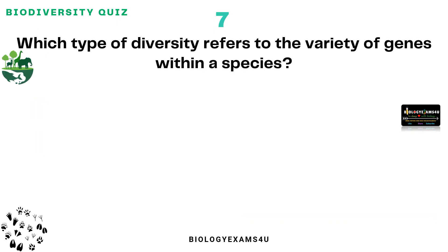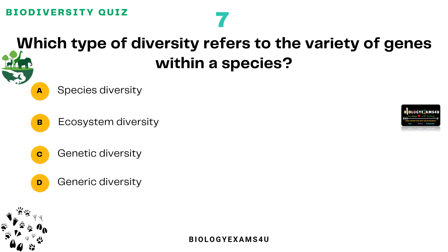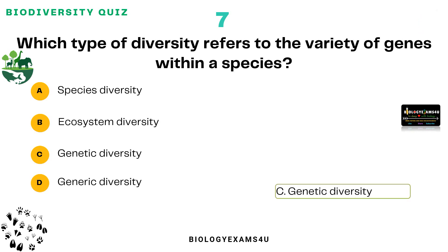Question number seven: Which type of diversity refers to the variety of genes within a species? Option A: Species diversity. Option B: Ecosystem diversity. Option C: Genetic diversity. Option D: Generic diversity. The correct answer is: genetic diversity.